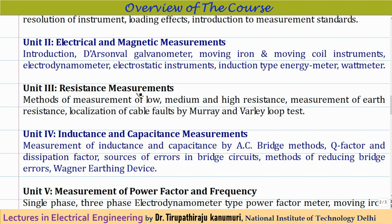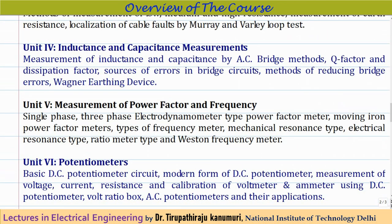Module 3 is resistance measurements. We will see different methods for measuring low, medium, and high resistance, then measurement of earth resistance, and localization of cable faults using the Murray and Varley loop test. This Murray and Varley loop test was already discussed in the cables topic in power systems, but here we will discuss it again from the measurements point of view.